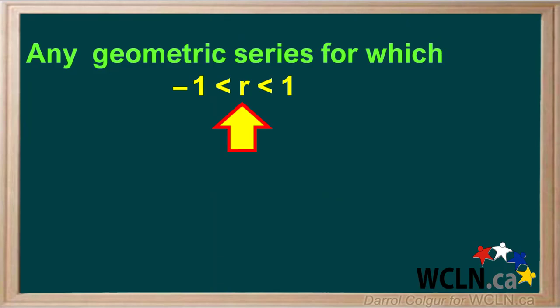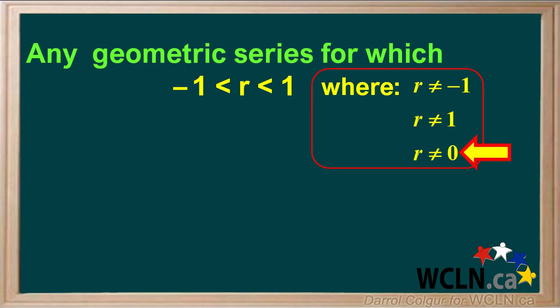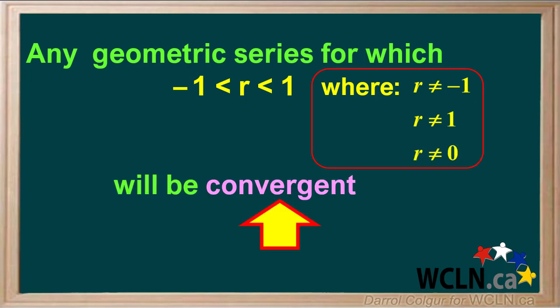So we can say that in a convergent geometric series, the sum of the terms will be limited as the terms increase. It can be shown that any geometric series for which R is between negative 1 and positive 1, where R is not equal to negative 1, not equal to positive 1, and not equal to 0, will be convergent.